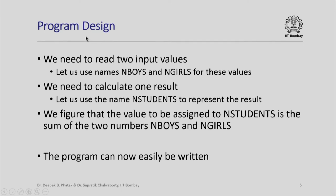We identify what exactly is given, we identify what exactly is to be calculated, how it is to be calculated, and we identify what exactly is to be output by the program. We notice that we need to read two input values, so let us use the names n_boys and n_girls for these values. We could have used a, b, p, q — anything — but it is useful to use names which are meaningful in the context of the problem. Since we are talking about number of boys and number of girls, it makes better sense to use names like n_boys and n_girls.